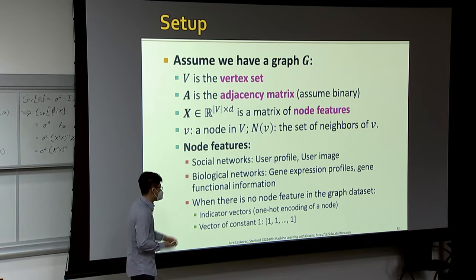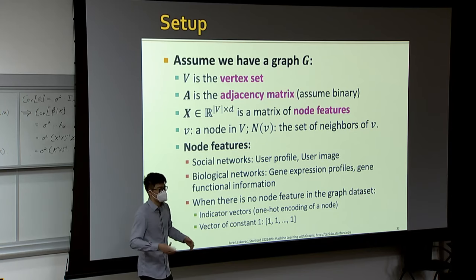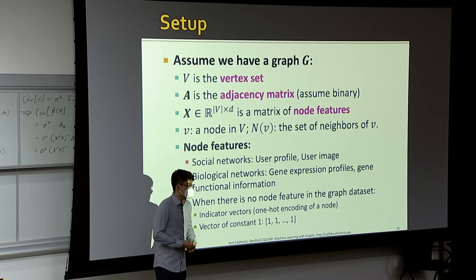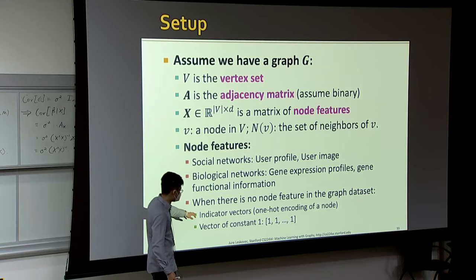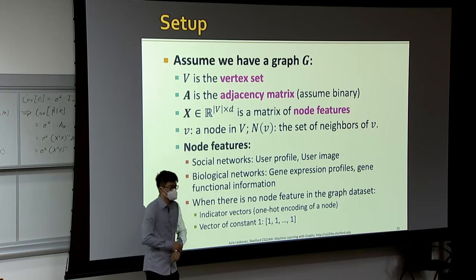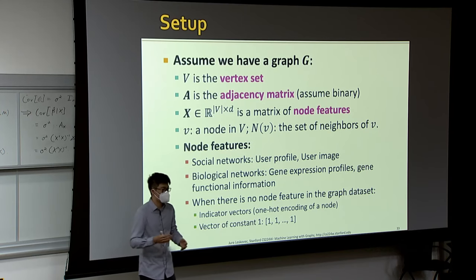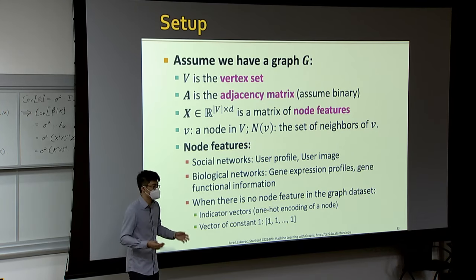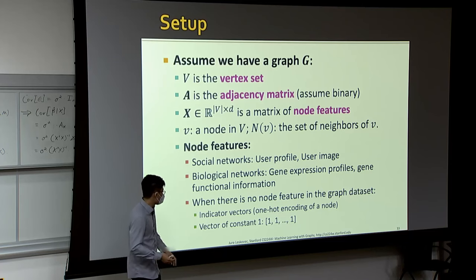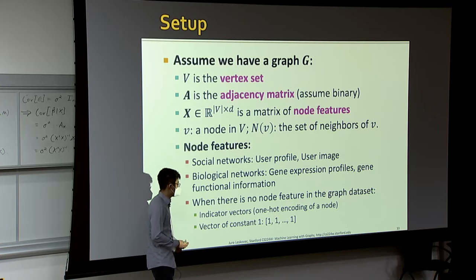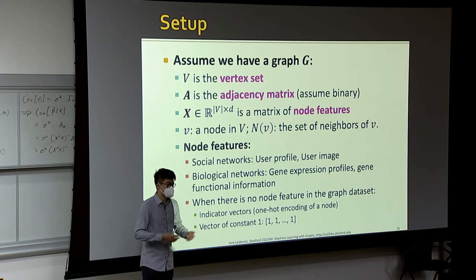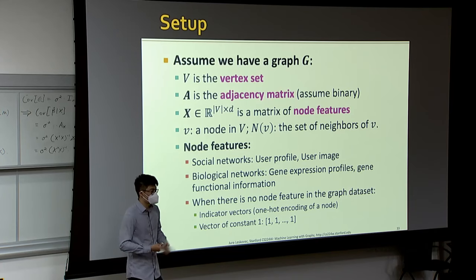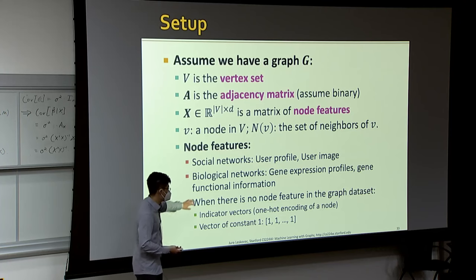When node features are missing, we have two options: use an indicator vector — for example, a one-hot encoding of the node — or use a constant value for all nodes, indicating they are treated equally. A one-dimensional constant is sufficient since its purpose is to serve as input to the neural network. Assigning different values to different nodes would encode additional prior information about those nodes.